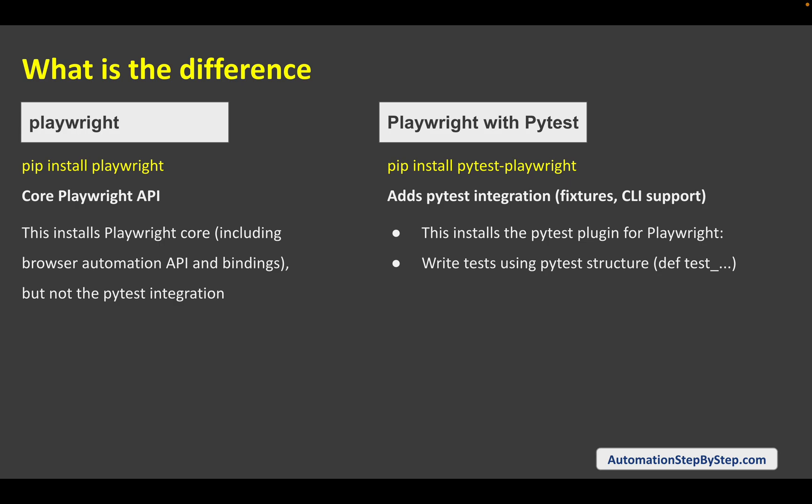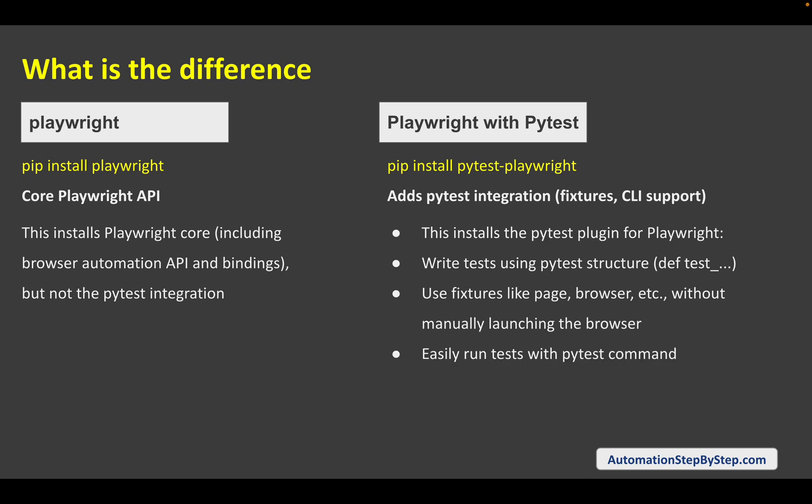We can write our tests using the pytest structure and use fixtures like `page` and `browser`. Using these fixtures we get all the options without having to manually set up things. For example, without pytest you'd manually create the page and add options, but with pytest you can just say `page` and directly start using all the web page options. With pytest we also get command-line options — like which browser to use, headless or headed mode, whether to record videos, and more.